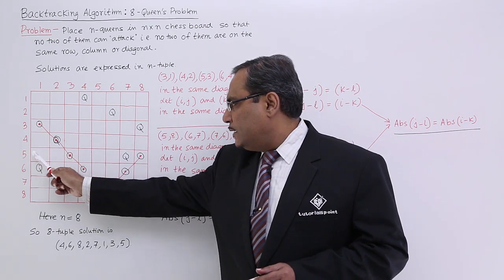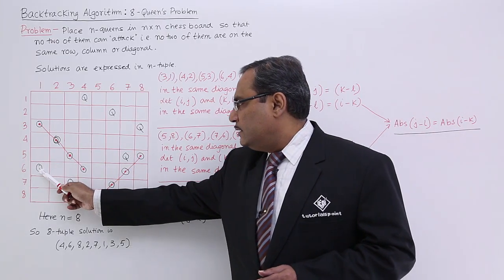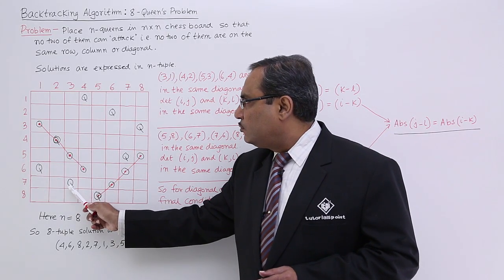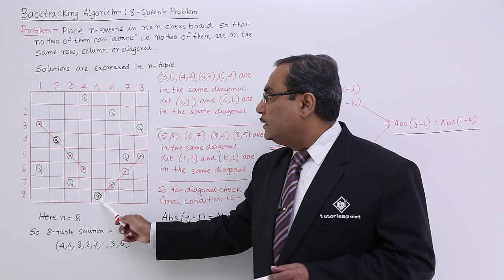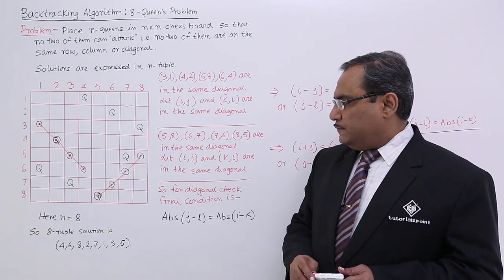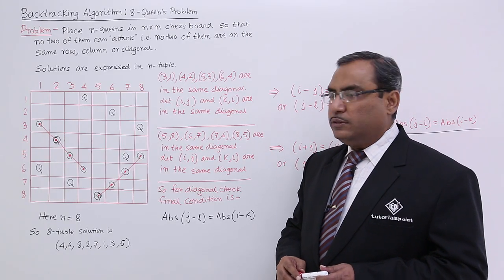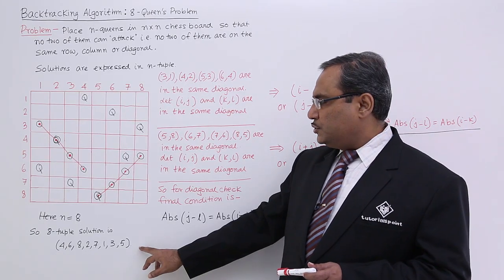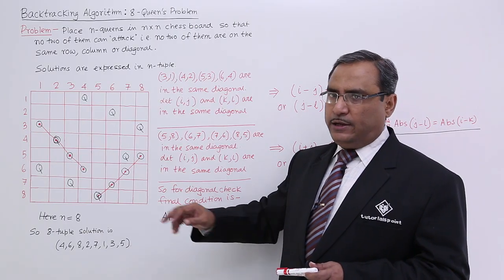So 2 and then I shall be going for 7, then it is 1, it is my 3, it is my 5. So in this way, this is my solution 4 6 8 2 7 1 3 5. That is the solution, one of the solutions for 8 queens problem.